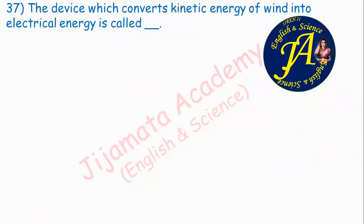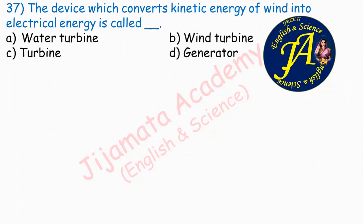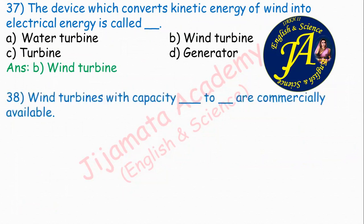The device which converts kinetic energy of wind into electrical energy is called as — options are water turbine, wind turbine, turbine generator. Correct answer is B: wind turbine. Wind mills use this to directly convert wind energy into electrical energy.